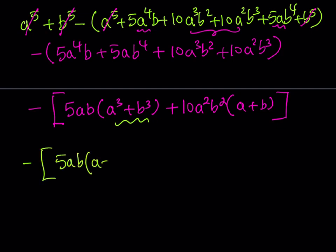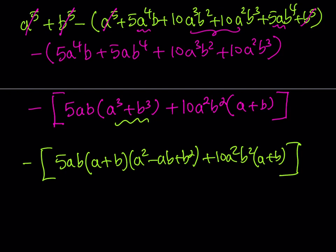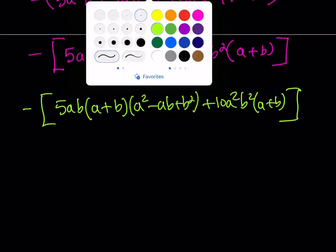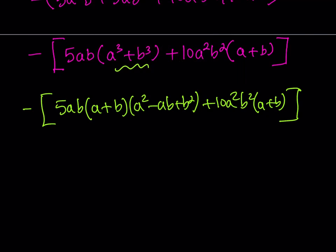I'd like to break this down into a plus b, and then a squared minus a b plus b squared, plus 10 a squared b squared multiply by a plus b. Now, what I'd like to notice is that I have an a plus b as a common factor.